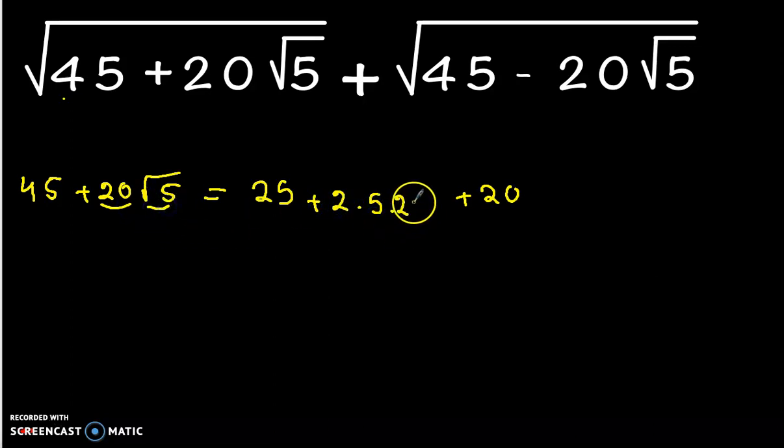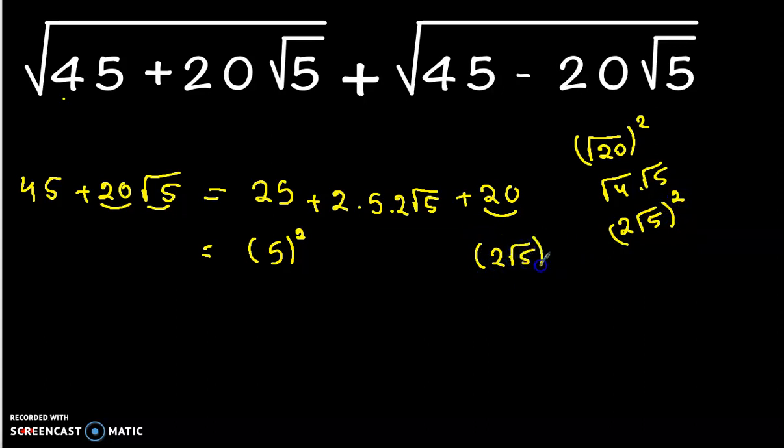Now 25 equals 5 squared, and the 20 equals √20 squared. √20 is √4 times √5, and √4 is 2, so we can write it as 2√5 all squared. So (2√5)² and here we have plus 2 times 5 times 2√5.